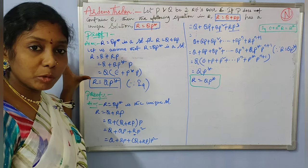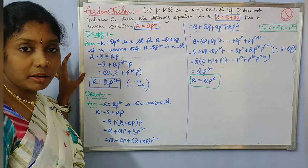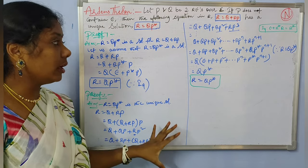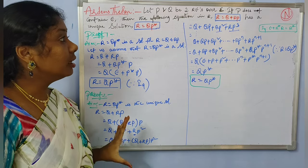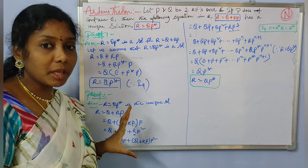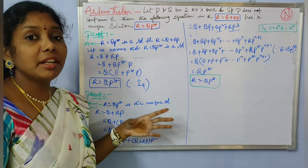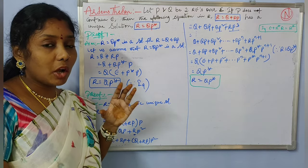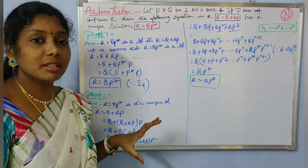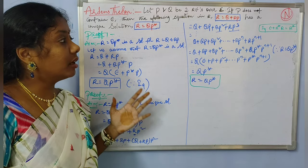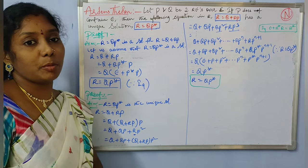Part 1 proves that QP star is a solution, and part 2 proves that this is the unique solution. This is the proof of Arden's theorem. Arden's theorem is helpful for solving the problems of obtaining regular expressions from finite automata. For complex finite automata, regular expressions derived using Arden's theorem are used. In the next video, you can see how Arden's theorem helps to get the regular expression from a finite automaton.